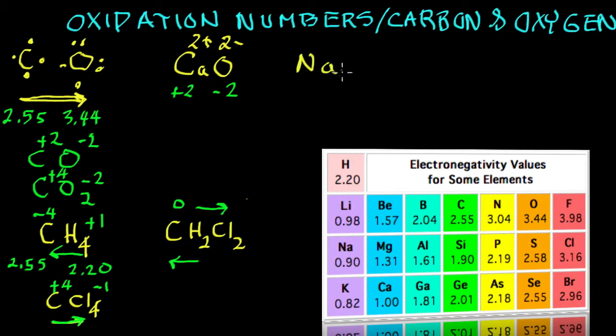And I'm not spending a lot of time. Sodium peroxide. Sodium is plus 1. There's 2 sodiums. The peroxide ion is polyatomic, meaning 2 atoms. It's therefore a minus 2. Each oxidation number for oxygen therefore is minus 1.